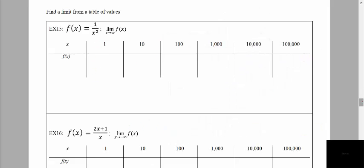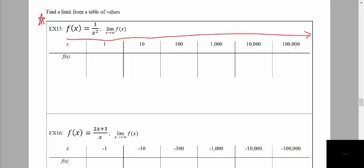Now we want to find a limit from a table of values. We want to see what happens as x increases without bound, using a calculator to find values. The x values increase from 1 all the way to 100,000. Evaluating our function: 1/1² gives 1, 1/10² gives 0.01, 1/100² gives a very small number — 0.0001.